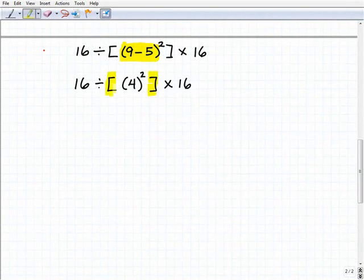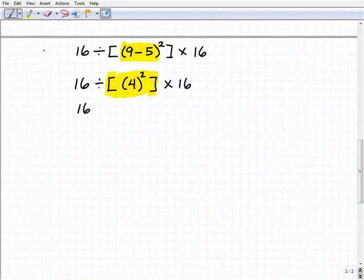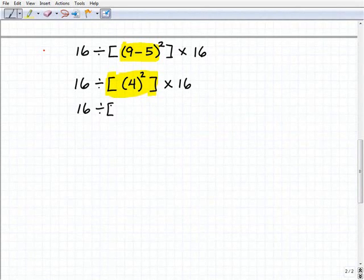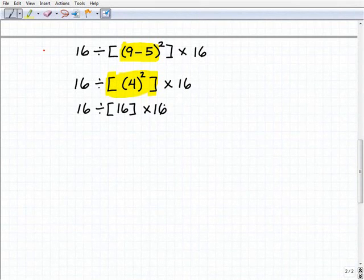So what do I do next? Well, I still have to work inside of whatever parentheses remain. These brackets are basically parentheses or grouping symbols, so I have to work on this 4². Notice I'm just rewriting everything nice and neat. This will be 16 ÷ [16] × 16. So it's going to be 4² inside the brackets, which is 16.